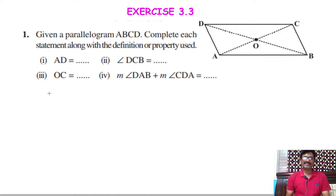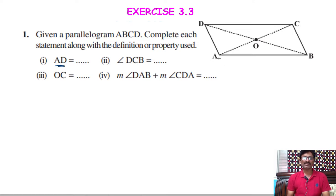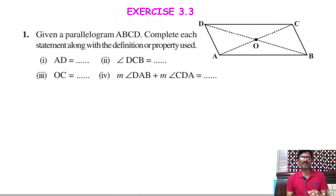Hi children. Exercise 3.3, Problem No. 1. Given a parallelogram ABCD, complete each statement along with the definition or property used. So here we have four problems. What we need to do is, suppose if you take the first question, AD equal to dash — that means in the diagram AD is a side. We need to write which side it equals, and the property used according to which property AD equals that side.